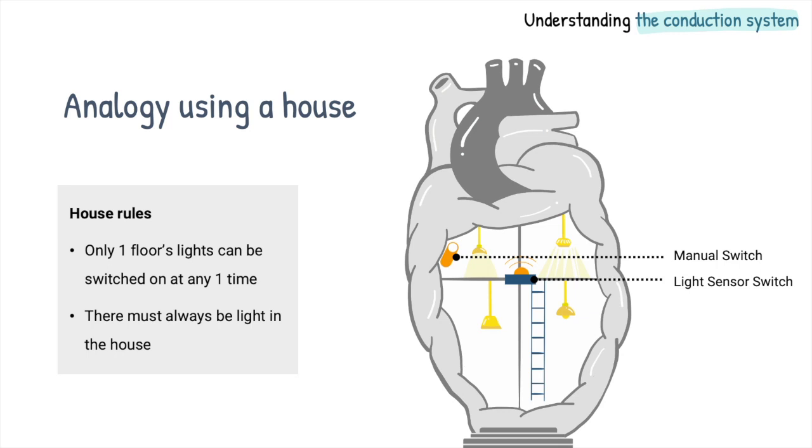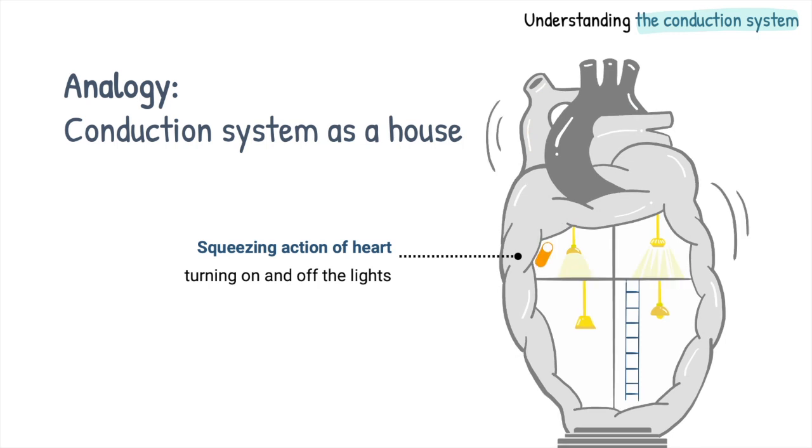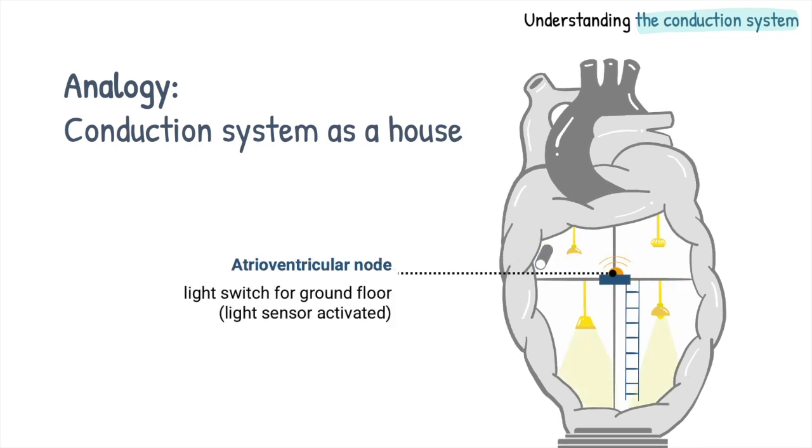So how does this analogy relate to the components of the heart? In this analogy, the sinoatrial node represents the switch on the top floor of the heart. The on and off of the lights represents the squeezing action of the heart, and the atrioventricular node is represented by the light sensor activated light switch, which sits between the two floors.